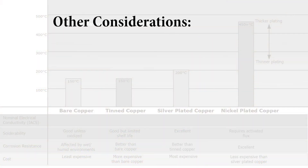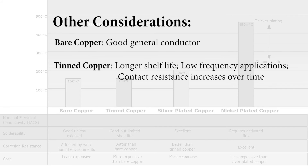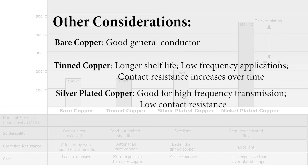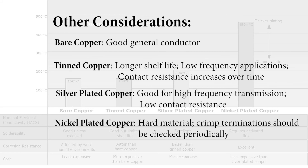Some other comments: bare copper is a good general conductor. Tin copper has some advantages over bare in that you can get gains in longer shelf life. Silver plated copper is often used in high-frequency applications where skin depth may be an issue. Nickel plated copper tends to be a hard material, so mechanical termination should be checked periodically.